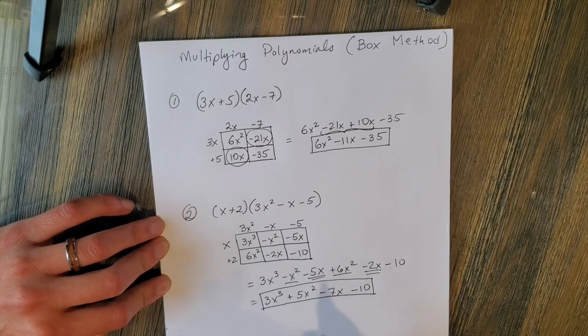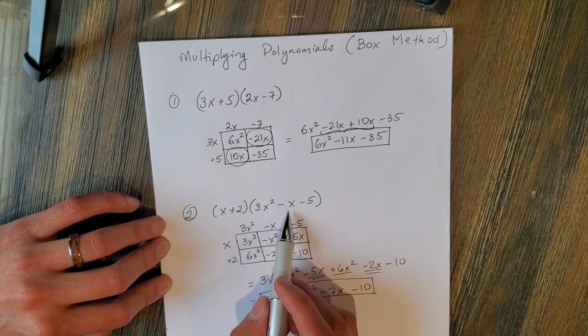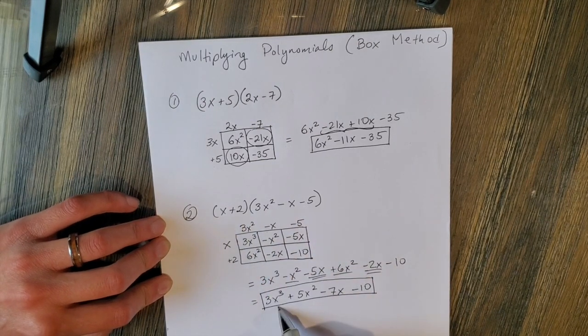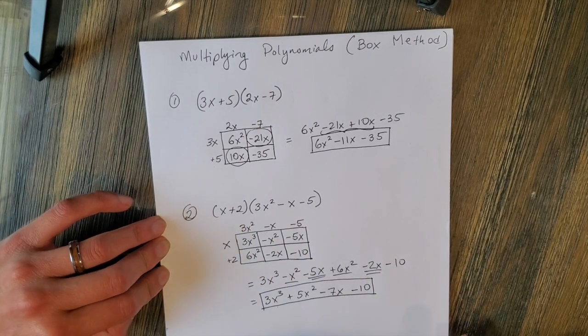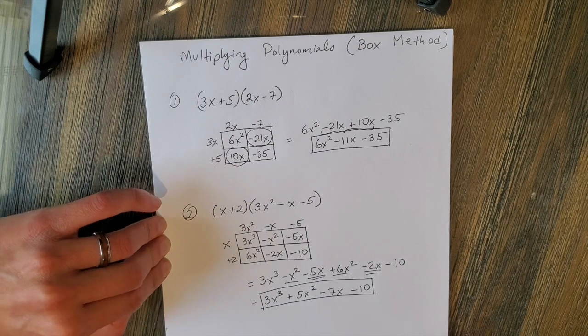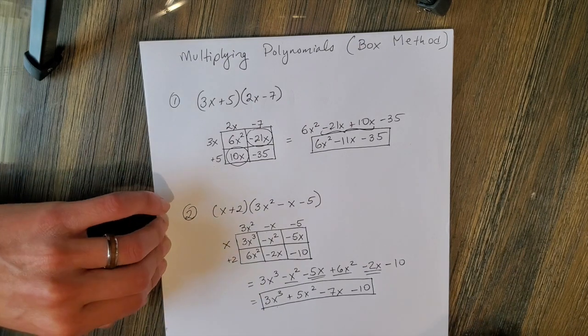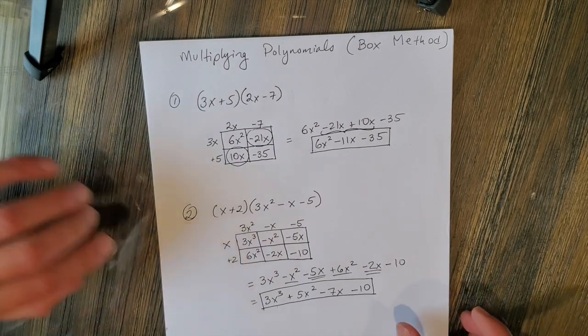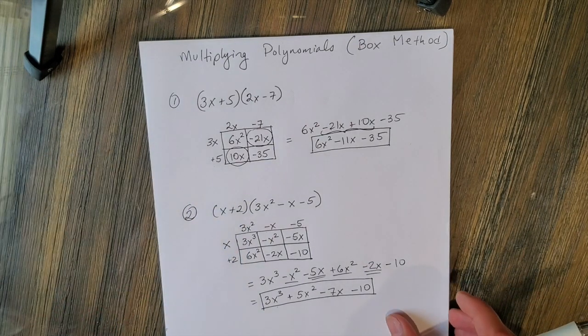Notice here I multiplied a binomial times a trinomial — a 2 by 3 — and ended up with four terms. Alright, next example.